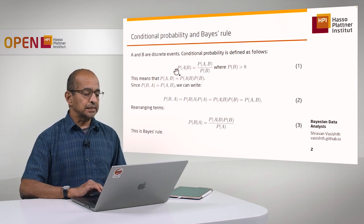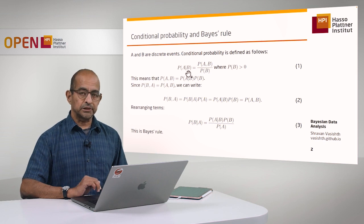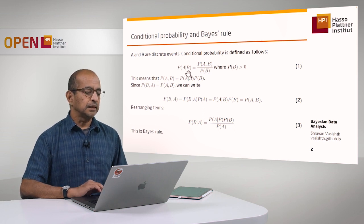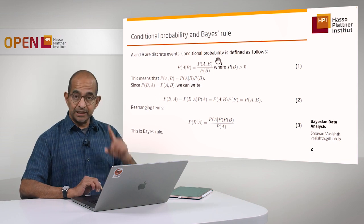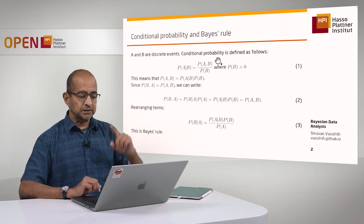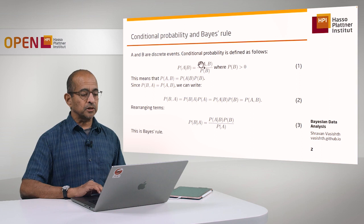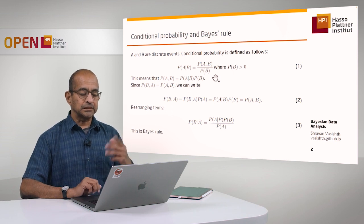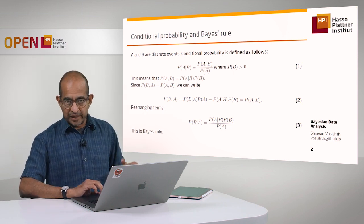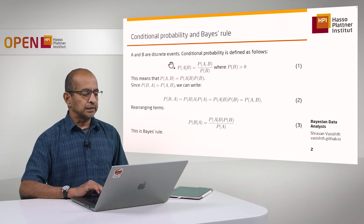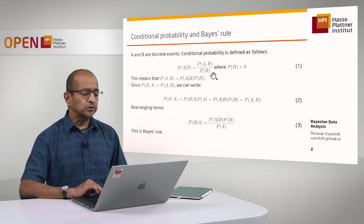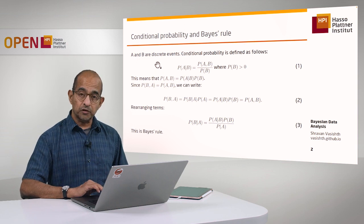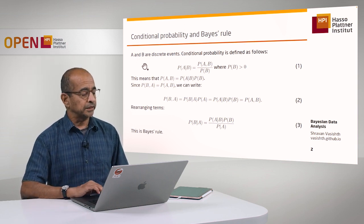This equation says that the conditional probability — probability of A given some particular value of B — is equal to the joint probability of A and B. Remember the joint probability mass functions and probability density functions I talked about? That's what we are discussing here — divided by the marginal probability of that particular value of B. So in the discrete case, we can compute this easily, and in fact you can use this for many interesting applications.